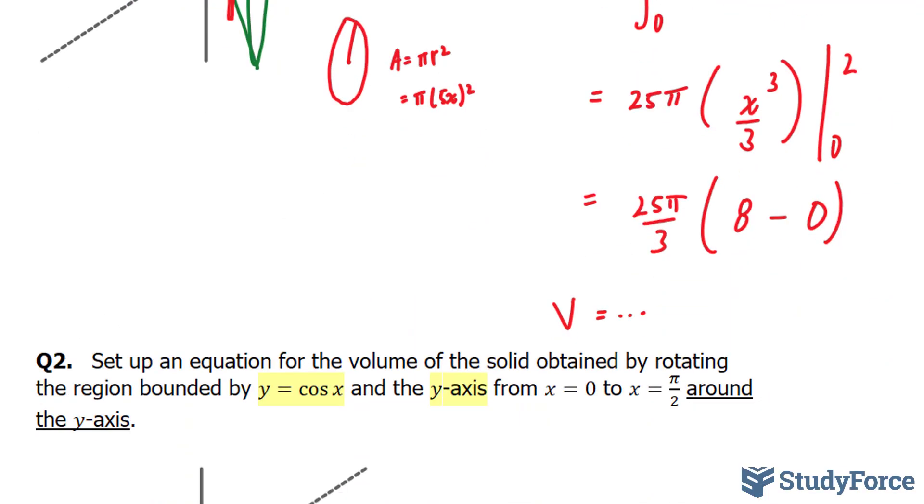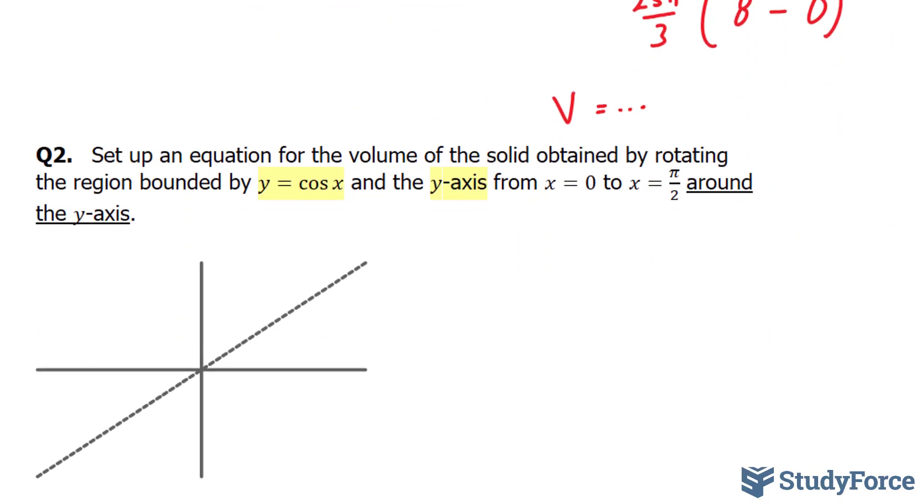Let's move on to question 2. In question 2, they ask us to set up an equation for the volume of a solid obtained by rotating the region bounded by y is equal to cosine x and the y-axis from x is equal to 0 to x is equal to pi over 2 around the y-axis.